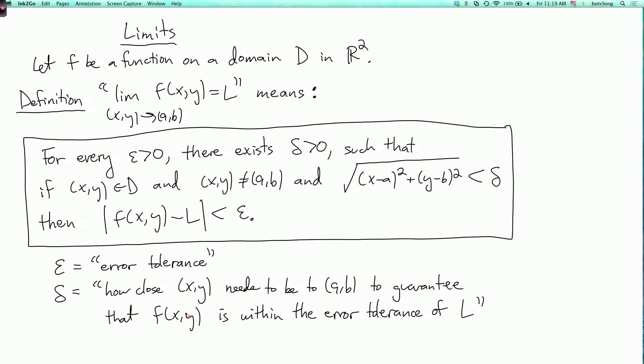So to see how this plays out, let's prove a simple example. So example, let's prove that lim (x,y)→(0,0) 2x = 0.